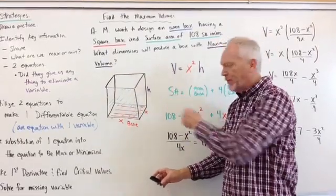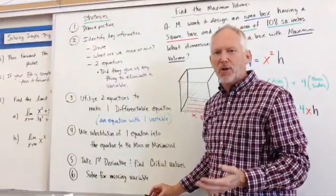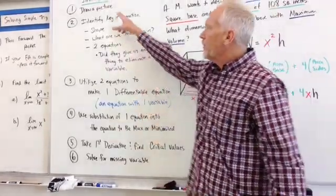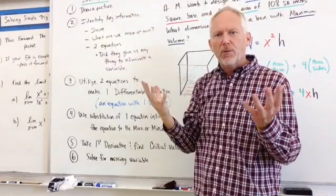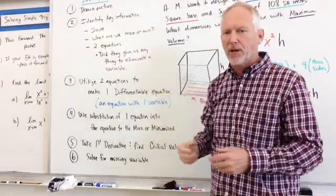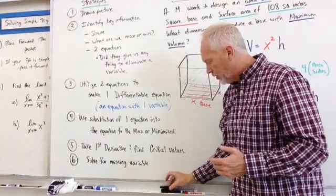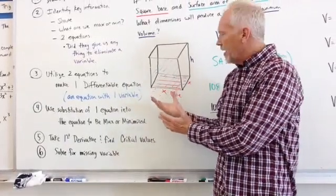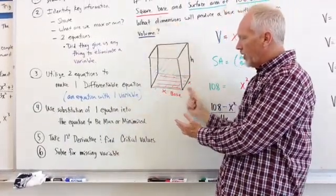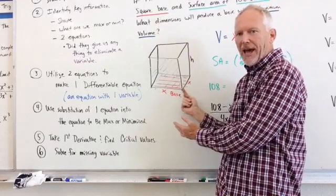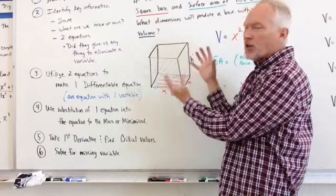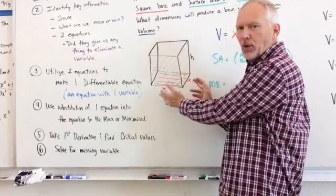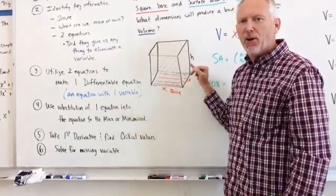So we have a maximum volume that they want. Let's review some of the strategies we can have here to solve these optimization problems. One is we want to draw a picture. So you read through the material and you think, what's happening here? And then we can draw a picture. So what I've got here is here's my box, and it says that it has a square base. So I know that the dimensions on the bottom are going to be x by x because it's a square.